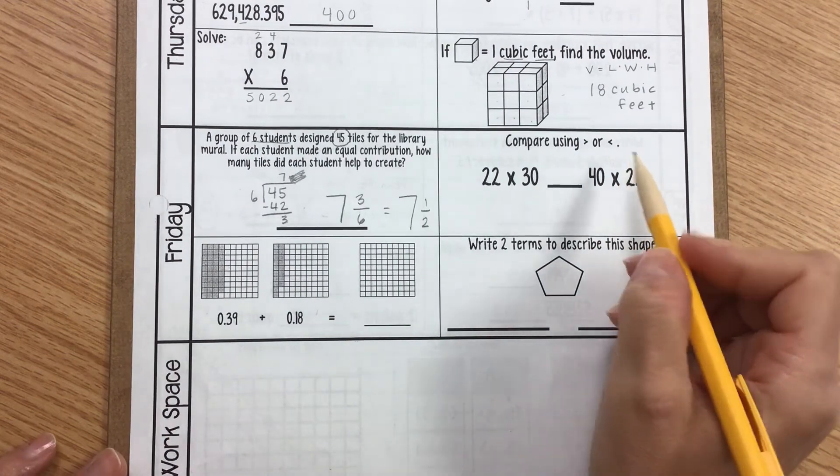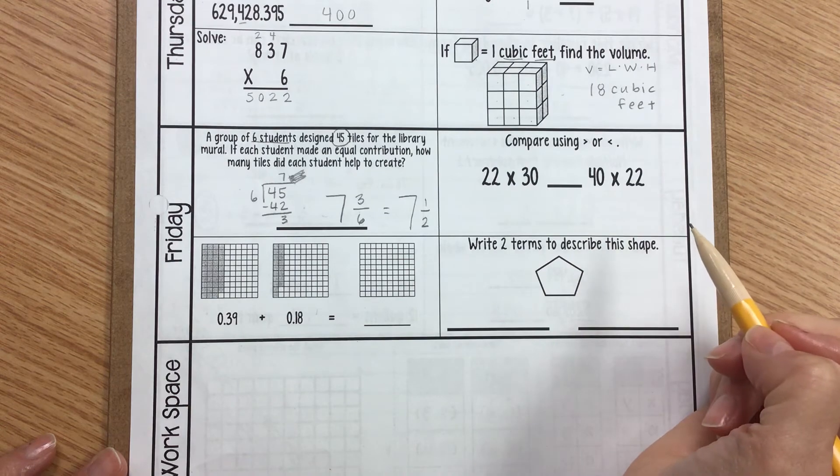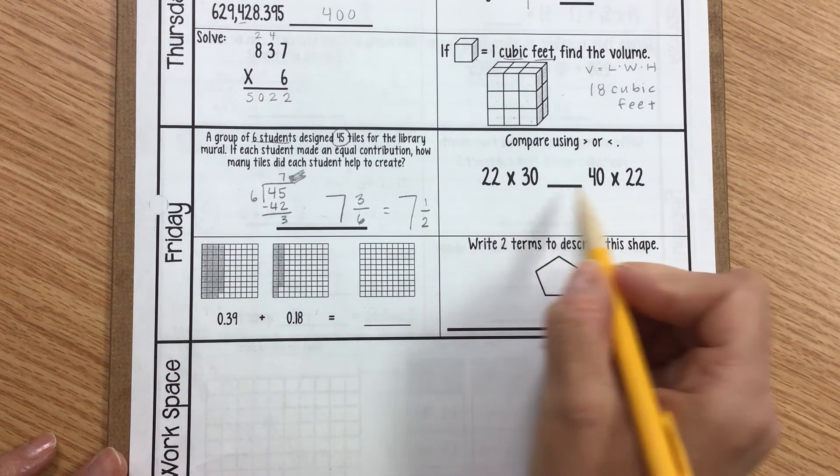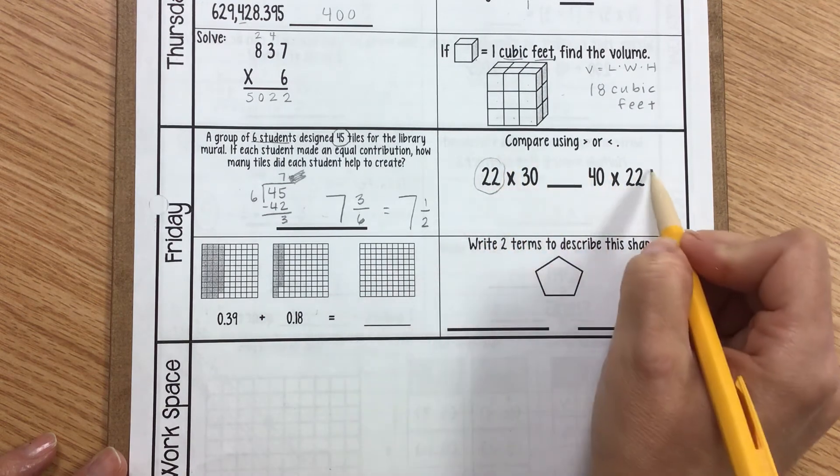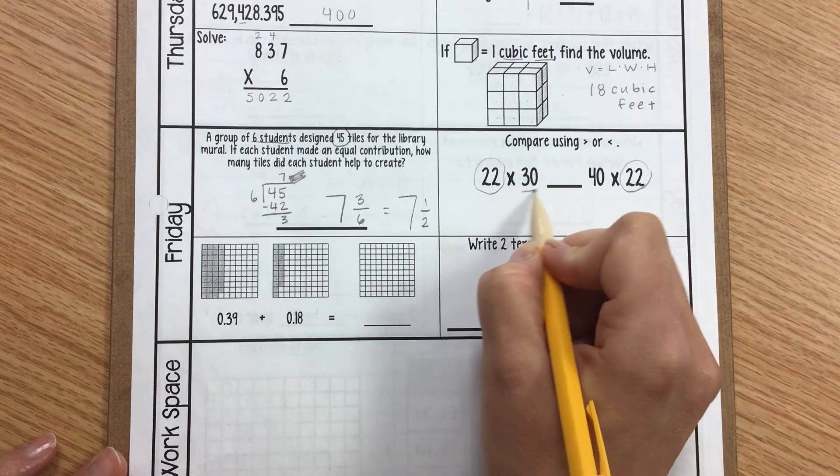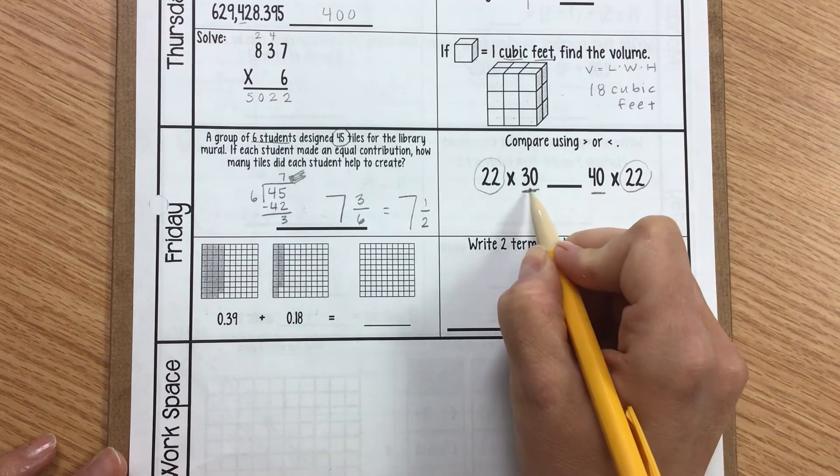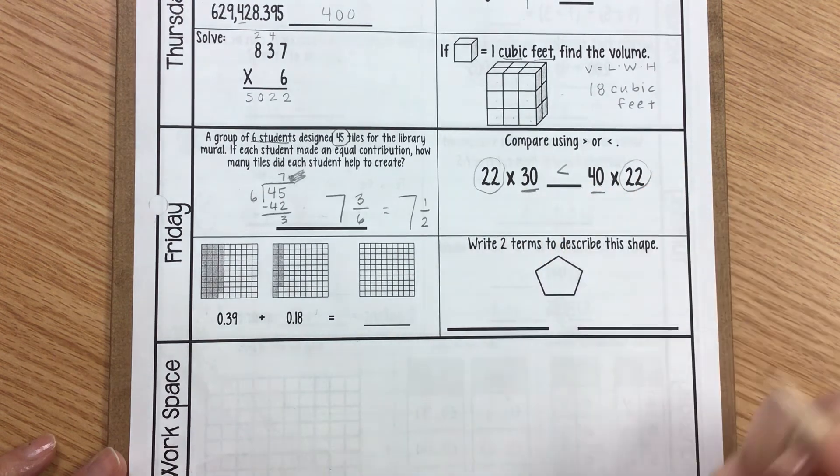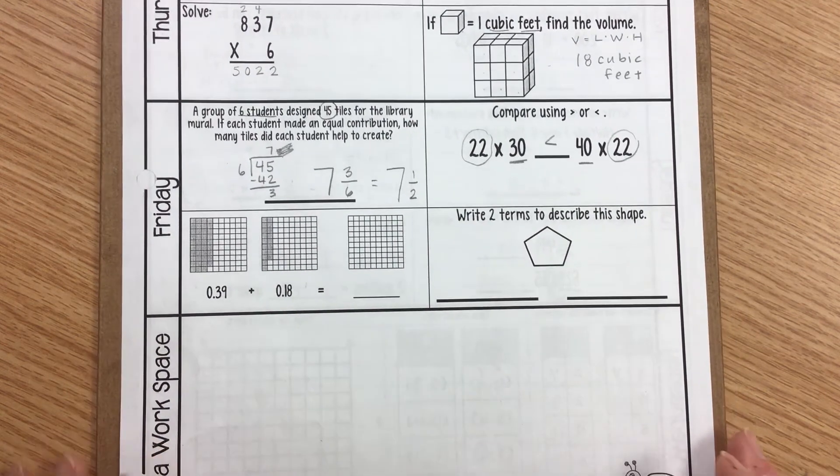Now I'm going to compare using greater than or less than. We've been talking about that this week in class. And have 22 times 30 compared to 40 times 22. So I see that these are the same thing. So the only thing I'm really going to be looking at is the 30 and 40. So I see that 30 is less than 40. No more alligators eating one larger number.